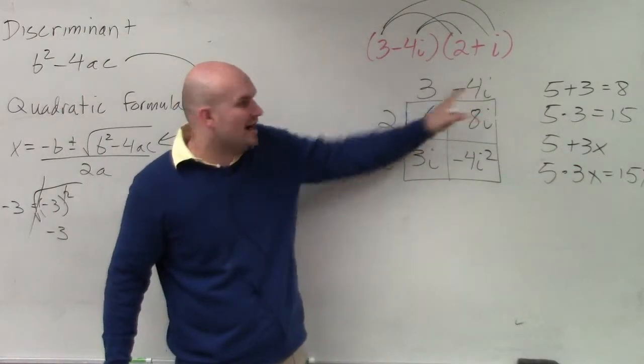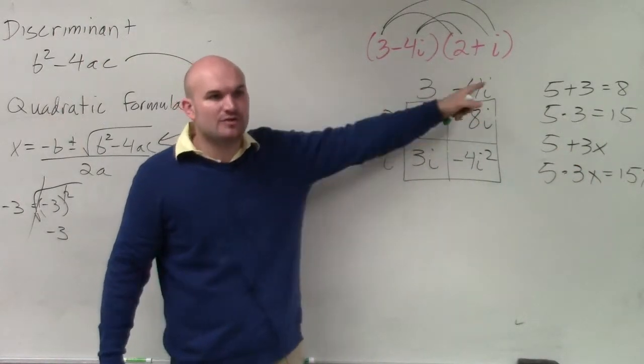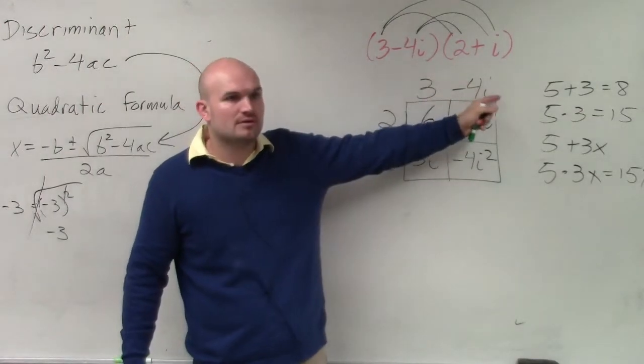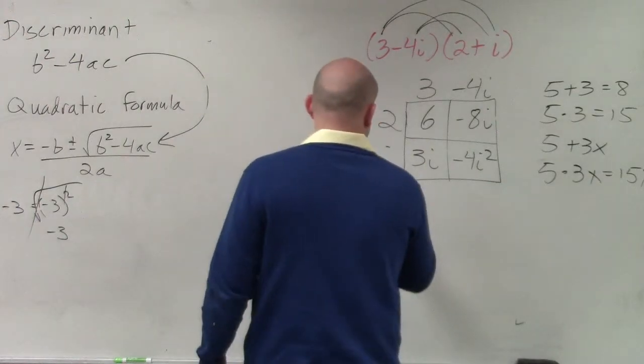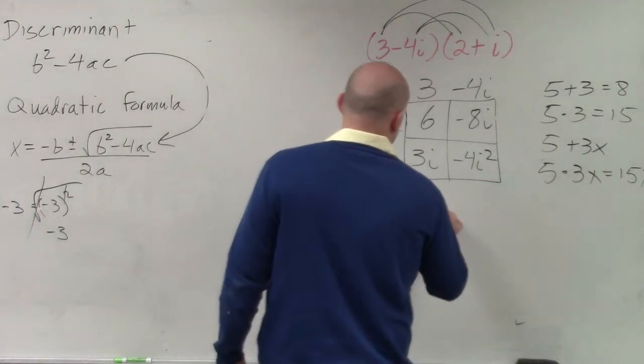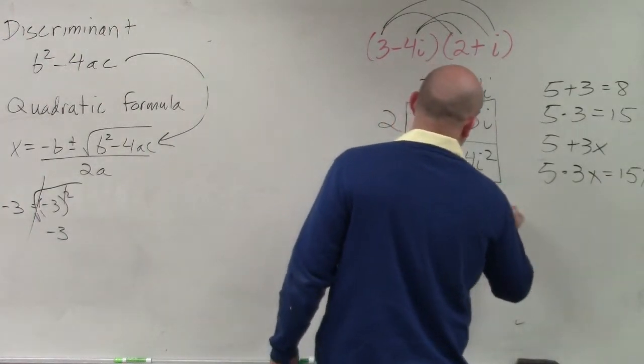So that's why 2 minus 4i, you multiply the real numbers, 2 times negative 4. Does that make sense? So that's where I get this. Now, let's write it out: 6 plus 3i minus 8i minus 4i squared.